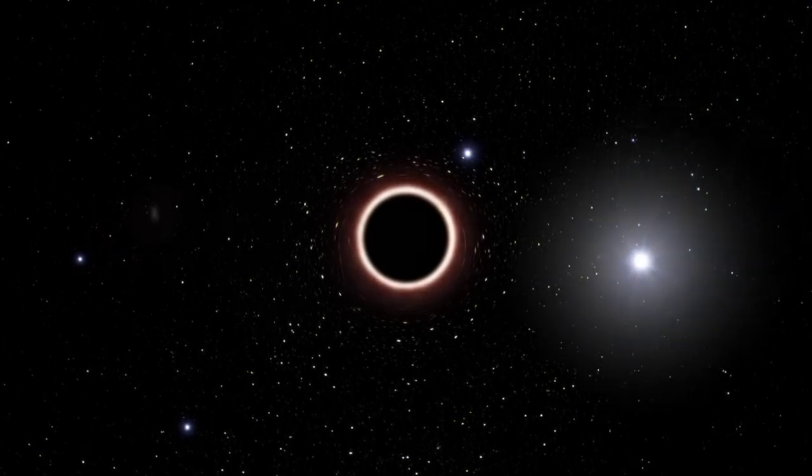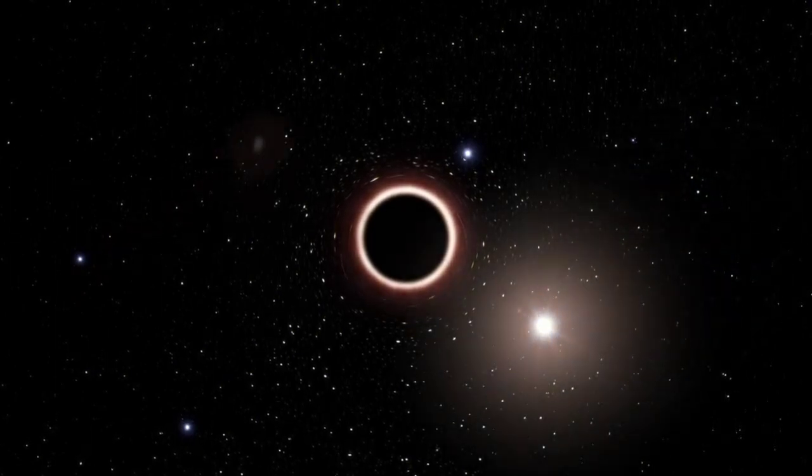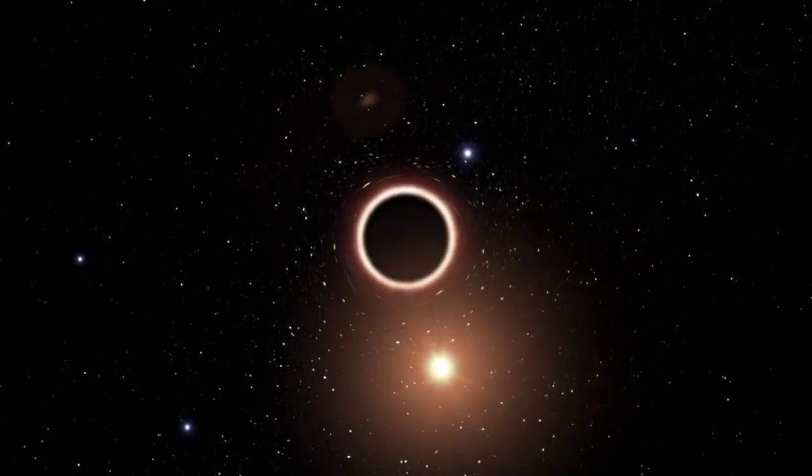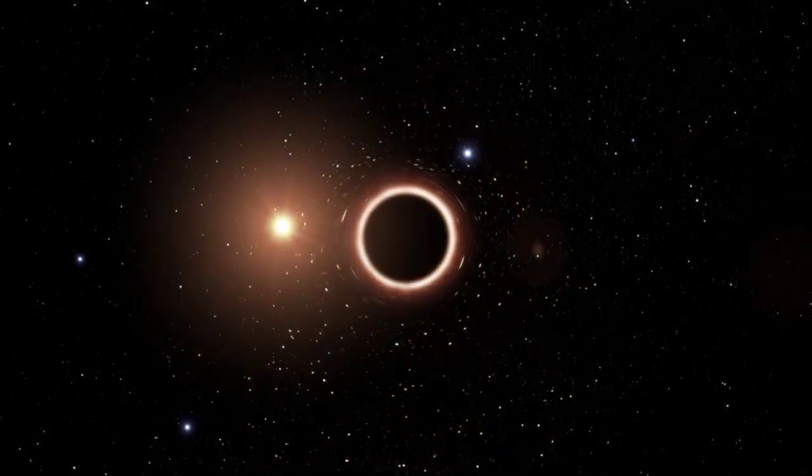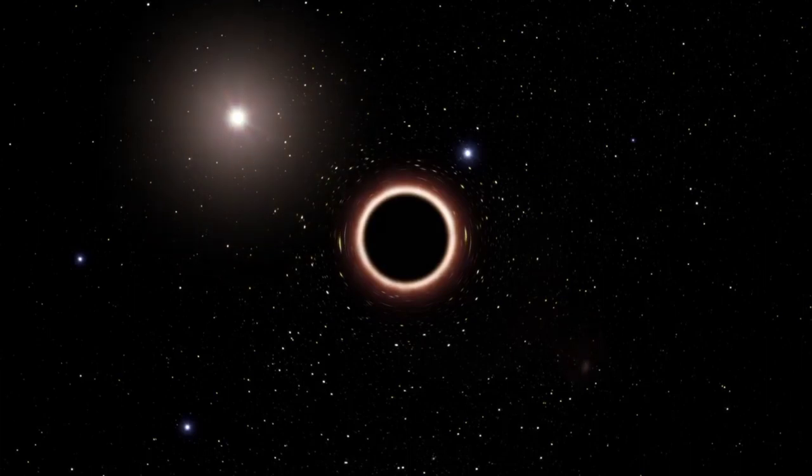Black holes usually cannot be observed directly because of both their small size and the fact that they emit no light. The presence of a black hole can be inferred through its interaction with other matter and with electromagnetic radiation such as visible light.